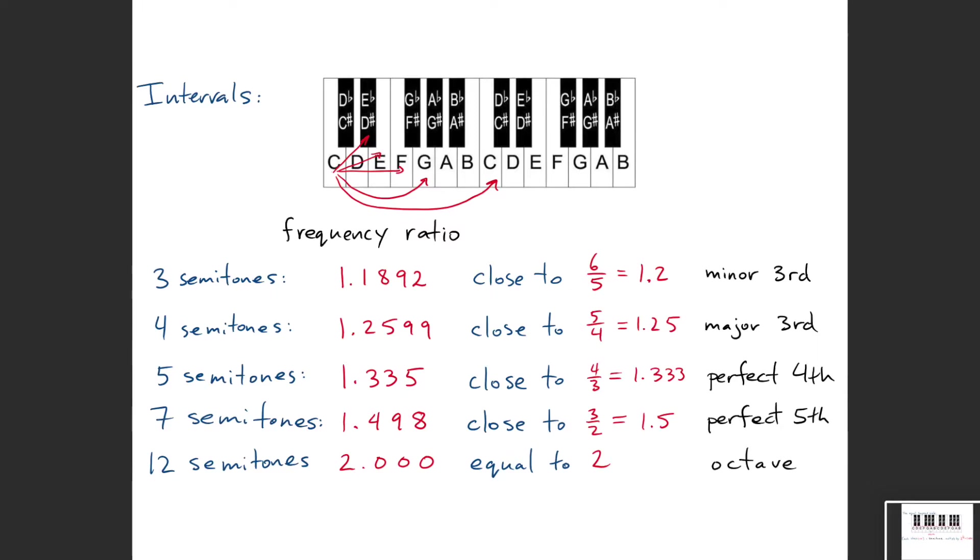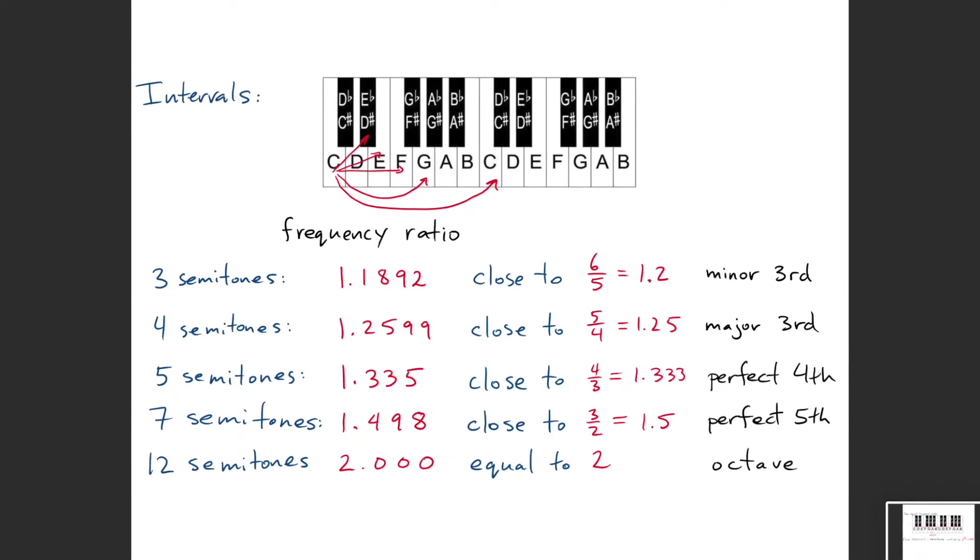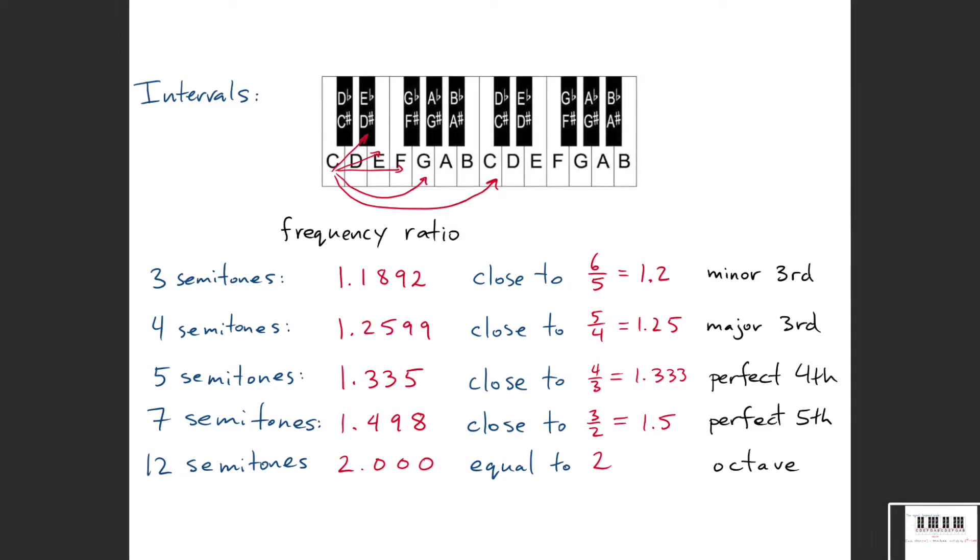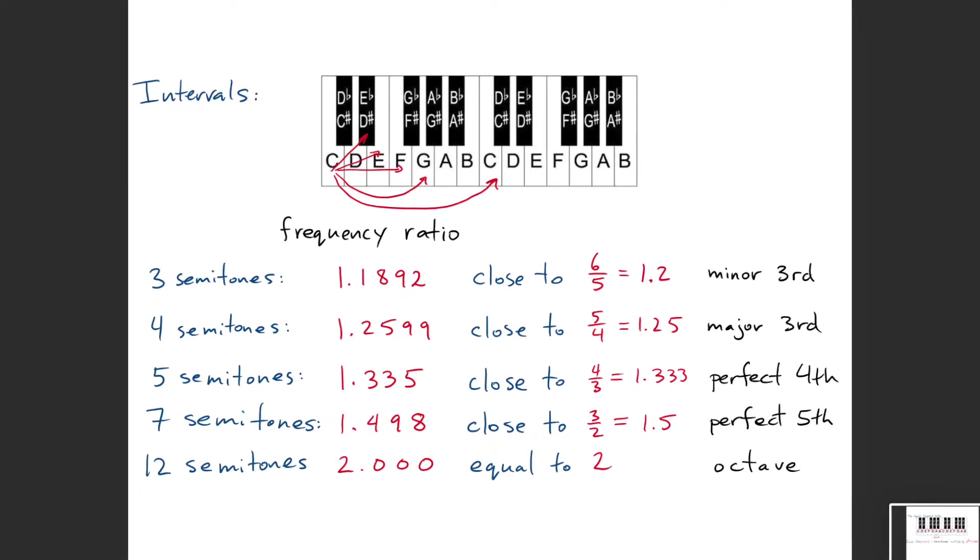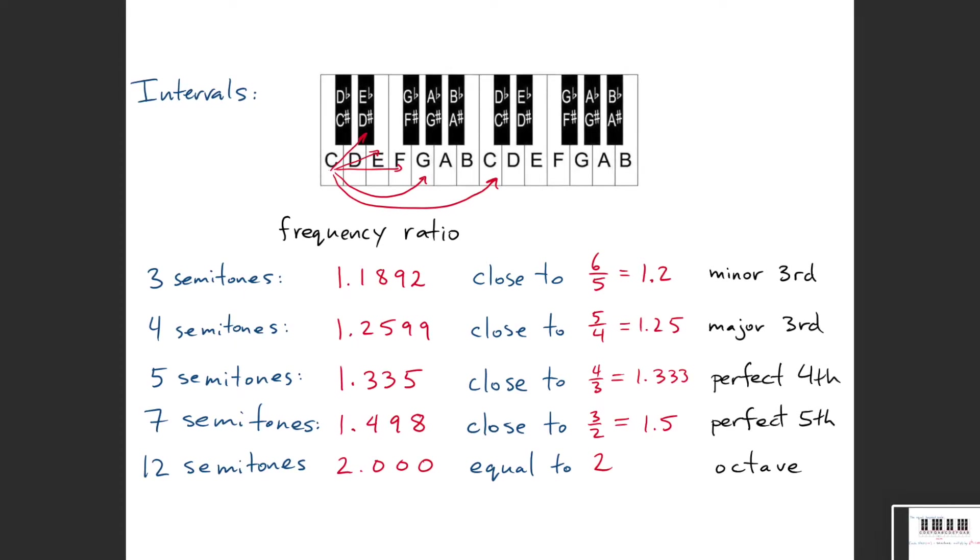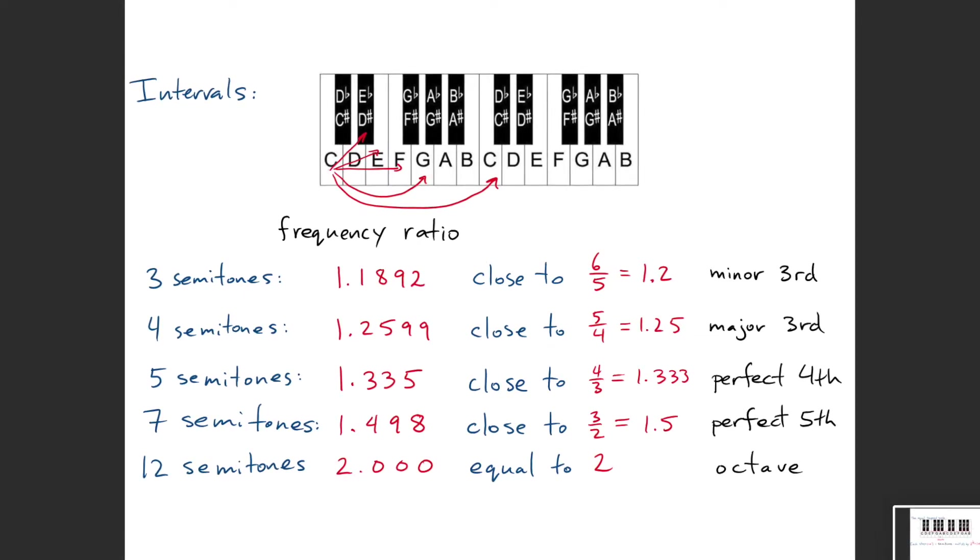If I go up three semitones, that's very close to a minor third. If I go up four semitones, then that is quite close, not as close as the other ones but still quite close, to a major third.